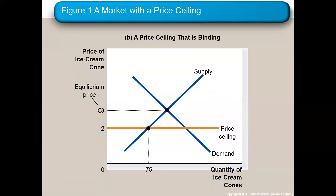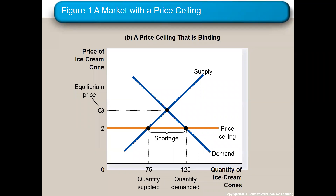Here is a binding price ceiling. The price ceiling is below the equilibrium — the upside down house — and it creates a shortage. People are demanding 125 ice cream cones but we're only supplying 75. People are supplying less because the price is less, and fewer suppliers can make a profit at that lower price. The price ceiling lowers the price, but fewer ice cream cones are being sold. So even though they're theoretically trying to help the ice cream industry, in a way they really are not.